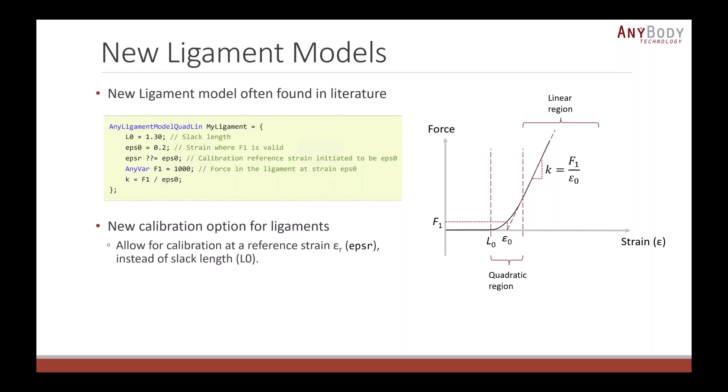When you have ligaments in your model, you also need to calibrate them often, especially if you scale your models. There are some new functionality to make it easier to calibrate model. Previously, you had to calibrate all your ligaments at the slack length. You would place the model in some posture where the ligament was at its slack length and then calibrate. But now you can calibrate your ligaments at any reference strain that you decide. It just makes it much easier to calibrate some types of ligaments.